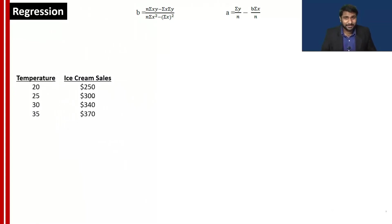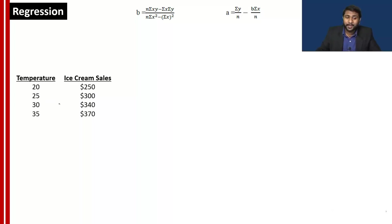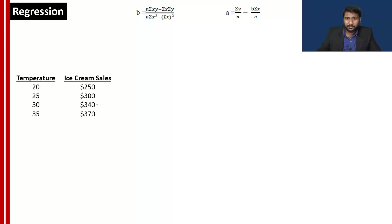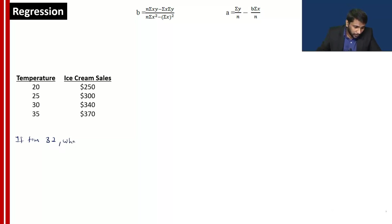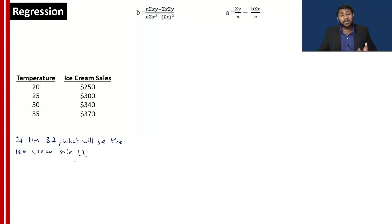Here I have given you some details — the temperature and the ice cream sales. If the temperature is 20, the ice cream sale is 250. If the temperature is 25, ice cream sale is 300. If the temperature is 30, ice cream sale is 340. If the temperature is 35, ice cream sale is 370. The question I am asking: if the temperature is 32, what will be the ice cream sale? I am asking you to do a forecasting, I am asking you to do a prediction.